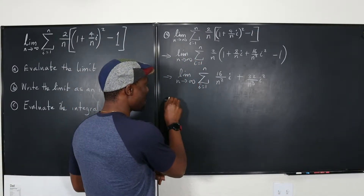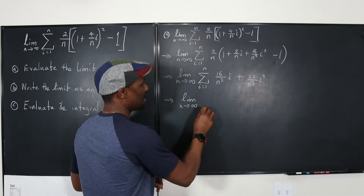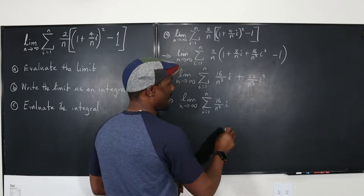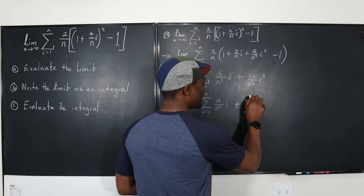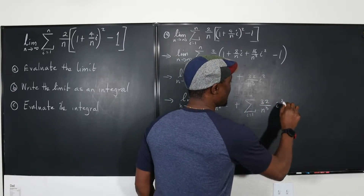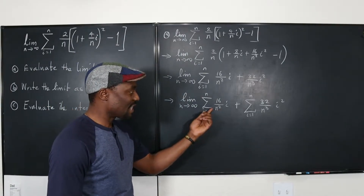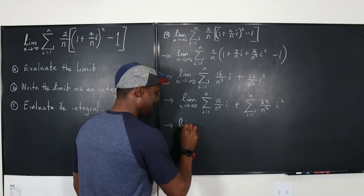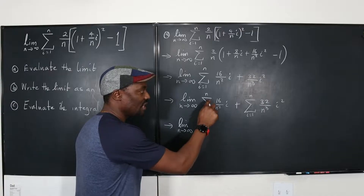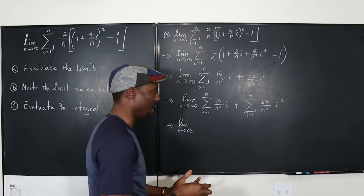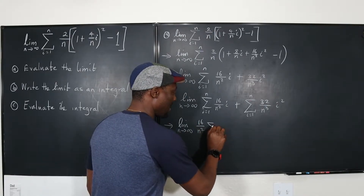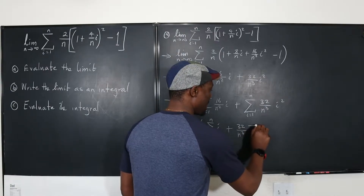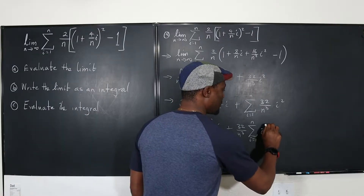This is the limit we're supposed to take. We can distribute the sigma to get the limit as n→∞ of the sum from i=1 to n of 16/n²·i, plus the sum from i=1 to n of 32/n³·i². Now, since i is changing and n is not, we treat 16/n² as a constant and pull it out: 16/n² times the sum of i, plus 32/n³ times the sum of i².